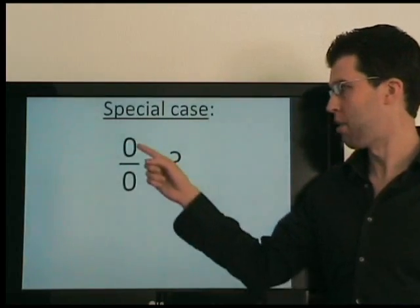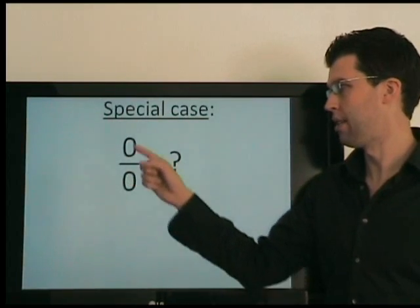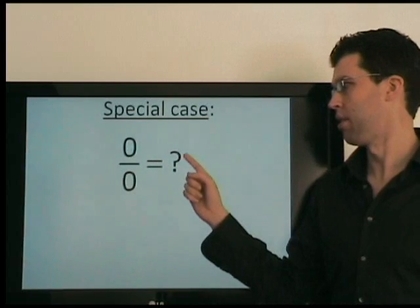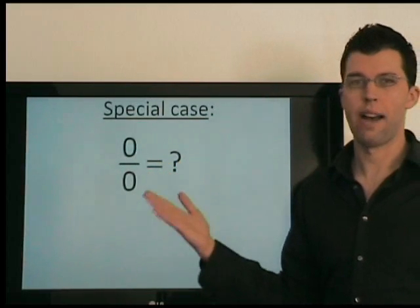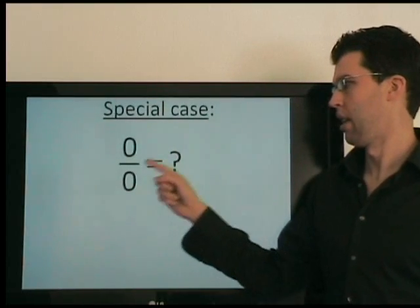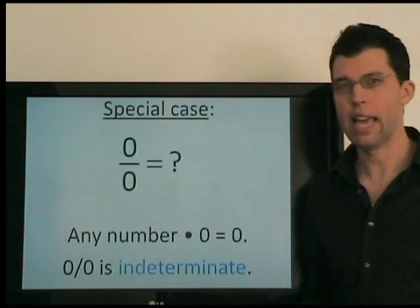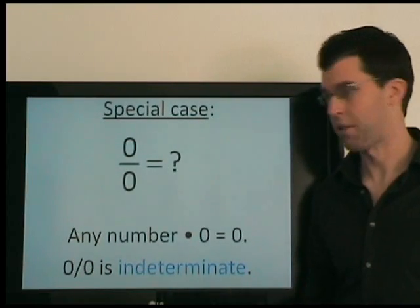Now this is a special case, when we have 0 in the numerator. Well, what number times 0 is 0? Well, 0 works. 0 times 0 is 0. What about 5? Well, 5 times 0 is 0. In fact, any number times 0 equals 0. So there's no single answer here. We say it's indeterminate because we can't determine the answer.